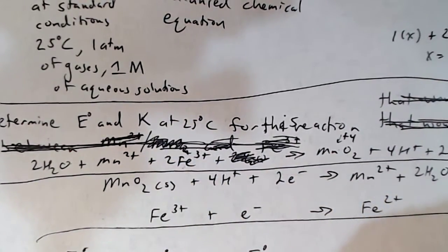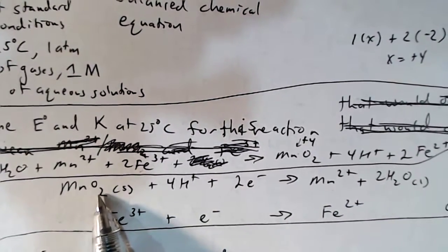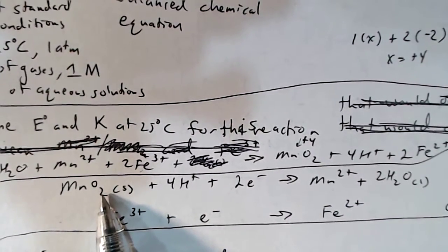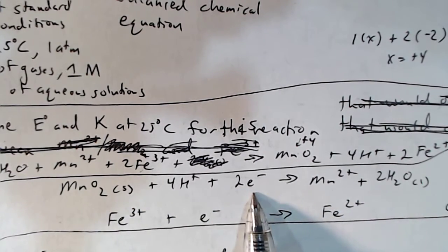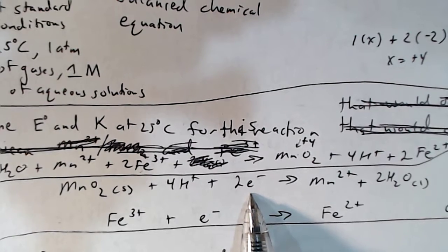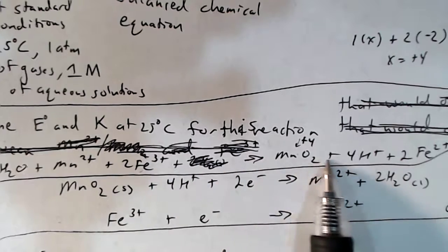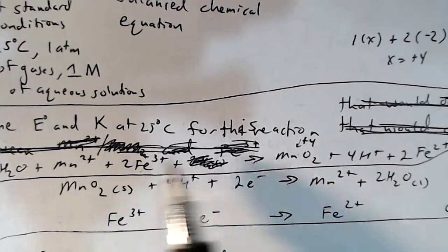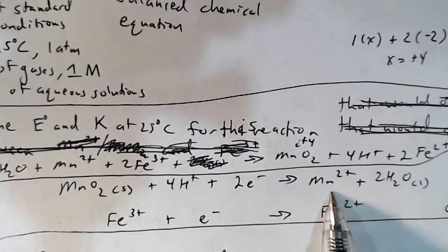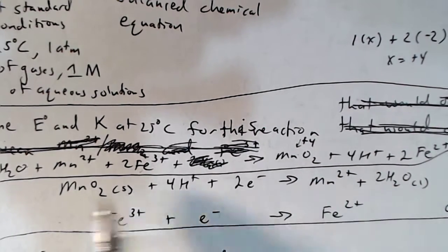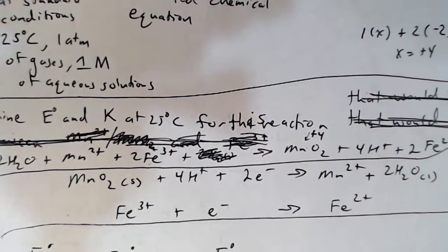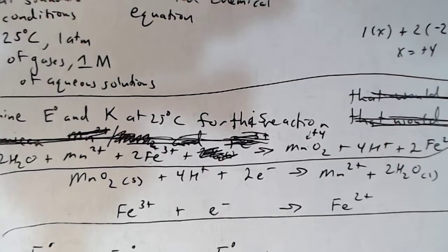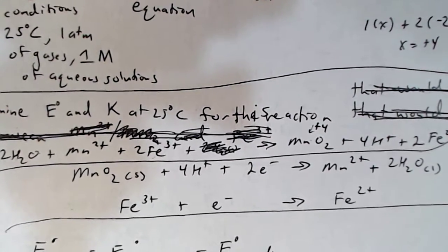Another way to determine this: looking at the standard reduction potential chart, when MnO₂ turns into Mn²⁺, MnO₂ is reduced. But the reverse reaction is happening in this overall balanced chemical equation, because Mn²⁺ is turning into MnO₂. So the reverse — Mn²⁺ turning into MnO₂ — releases 2 electrons, which is an oxidation. Either way should work for determining whether the manganese species is oxidized or reduced.